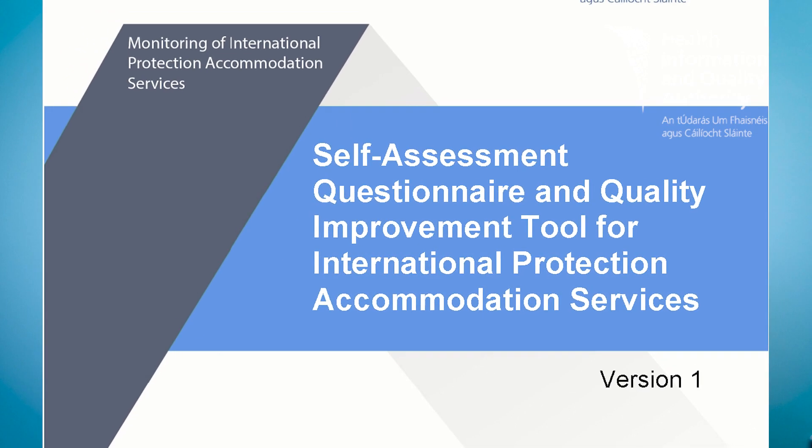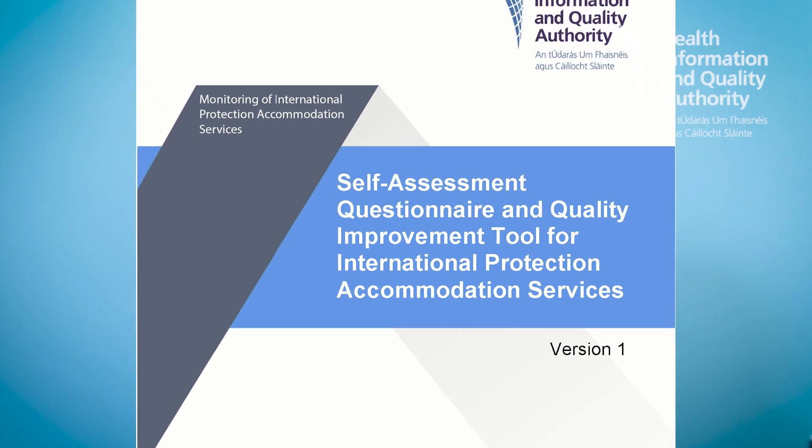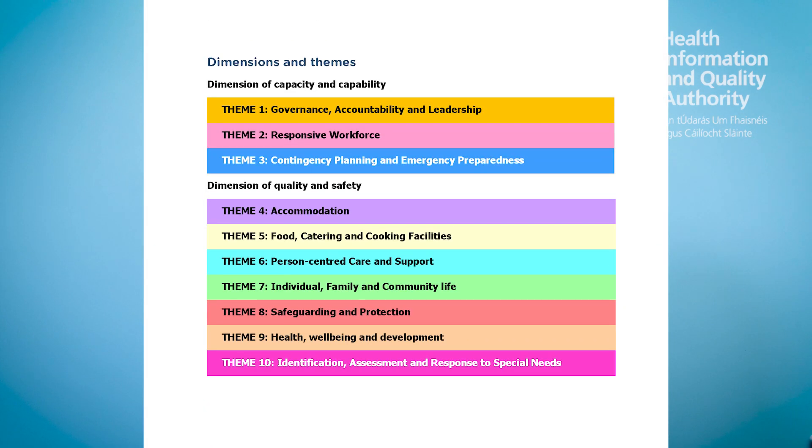To help you with this, HICWA have developed the Self-Assessment and Quality Improvement Tool as a simple and effective way for you to determine your compliance levels. This video will give you a brief overview of the Self-Assessment and Quality Improvement Tool and how to complete it. The tool is a user-friendly, editable PDF document that can be easily completed on a computer without the need to print anything out. It covers all ten themes of the National Standards. Completing the document can help you to identify the things that you are doing well and to prioritise areas which may need improvement in your service. It is a quality improvement initiative to enhance the services you provide, so that people living in your accommodation centre experience a safe, comfortable and supportive environment.